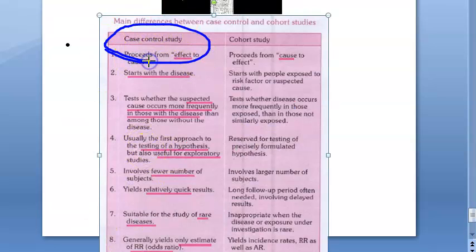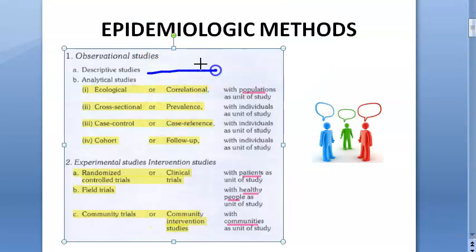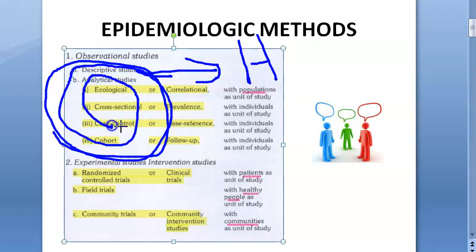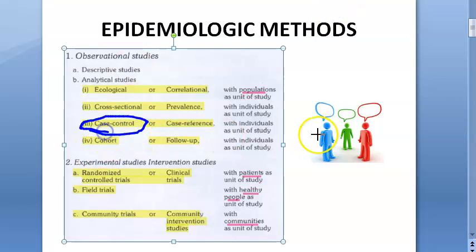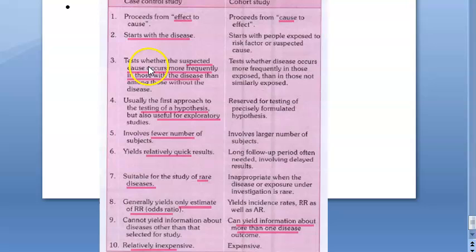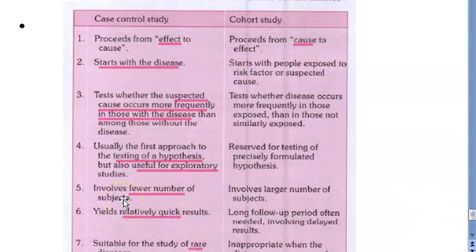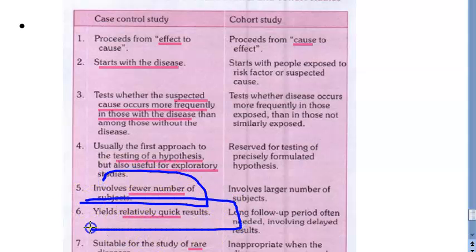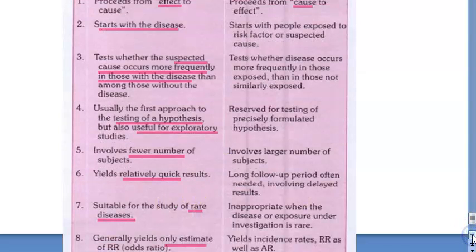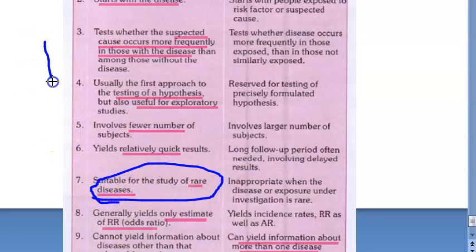A case control study is immediate — you don't have to wait 20 years. It is usually the first approach for testing a hypothesis. After a descriptive study gives you a hypothesis, you test it with analytical studies. In a case control study, you quickly pick up diseased people, ask about their past exposures, and can complete the study in a short time. It is useful for exploratory studies, involves fewer subjects, and gives quick results.